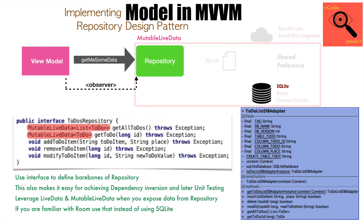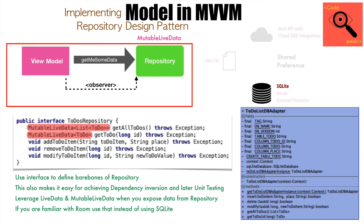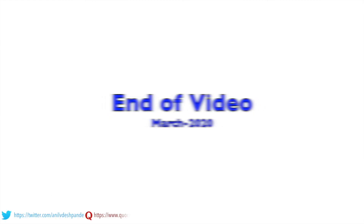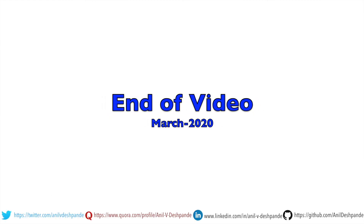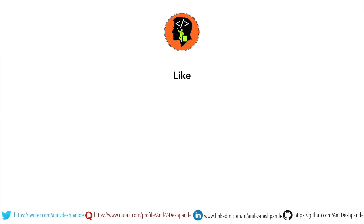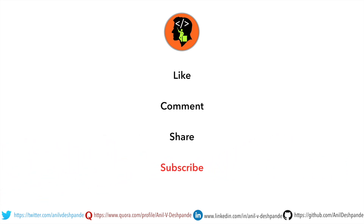So the discussion so far was about the interaction between the repository and the SQLite database. Now the next part is what exactly happens between the repository and the ViewModel. We will see that in the next video. That brings us to the end of this particular video. Don't forget to like, comment, share the video and subscribe to the channel. Take care. Bye.